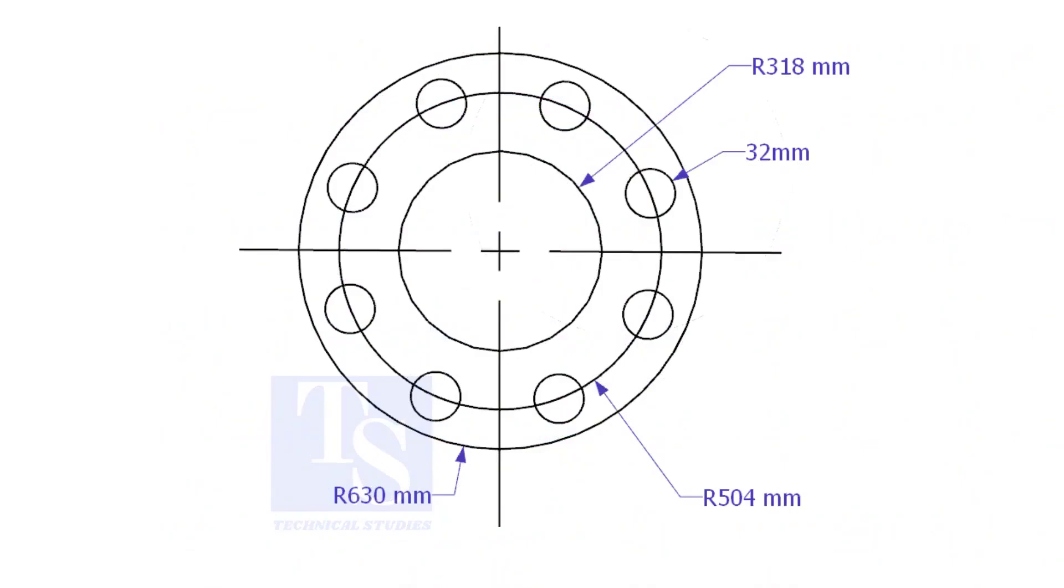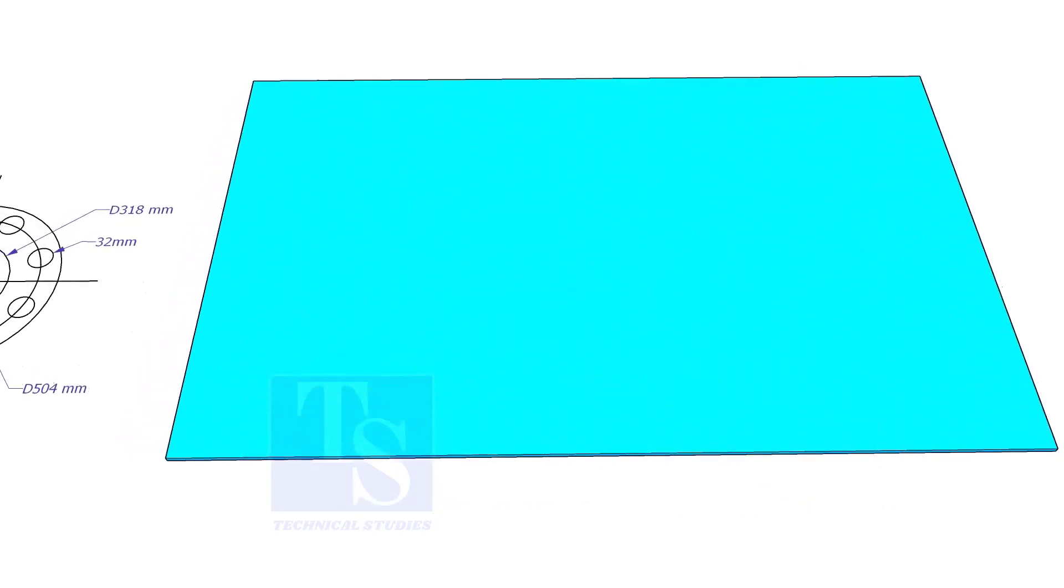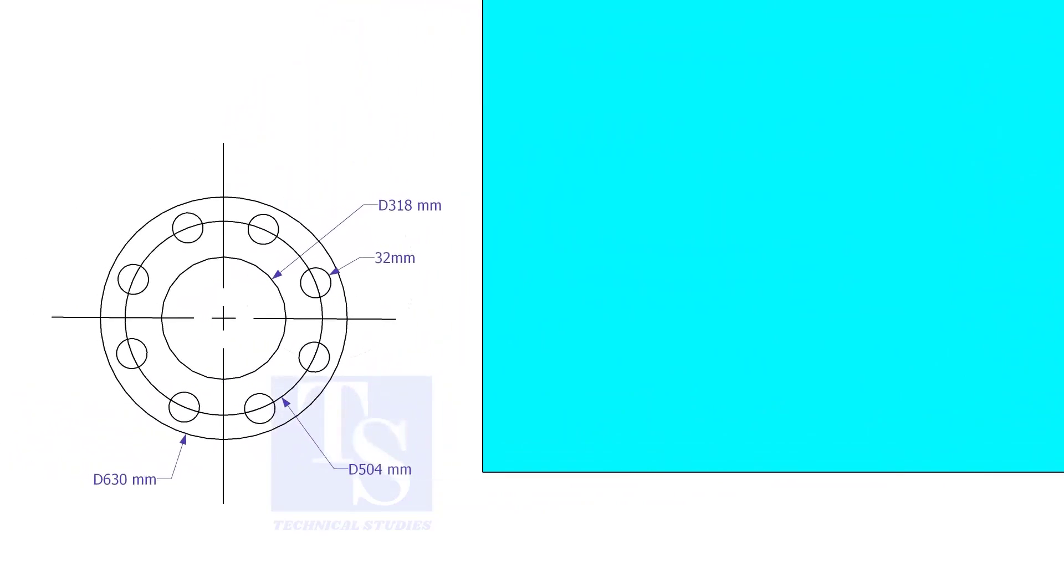Let us mark this flange. Draw a line, 10 millimeters more than the half OD of the flange, from the edge of the plate.